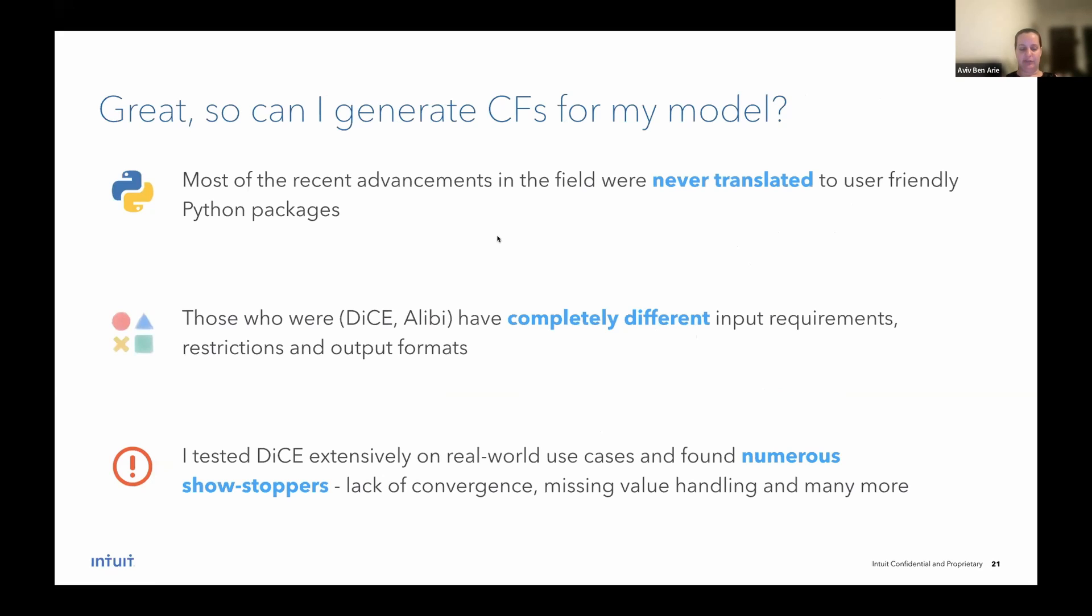So we understand how to generate counterfactuals, how to make them diverse, how to make them feasible. I'm sure you're all excited to go ahead and generate counterfactuals for your own model. But apparently most of the recent advancements in the field, they showed they're all from the past three to five years, were never translated to user friendly Python packages. And those that were translated, for example, dice or alibi, which I didn't show today, have completely different input requirements each, meaning you need to learn how to use each one separately. It's also very hard to compare them. Each has different restrictions, issues, and output formats. And this makes this not so user friendly.